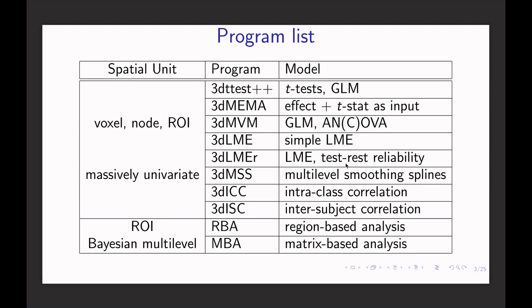3D MSS — Multi-level Smoothing Splines. We use this program to model non-linear relationships between a quantitative variable and brain response. Or we may use it to model the situation when each task is estimated with multiple basis functions — essentially estimating the hemodynamic response, so each condition will have multiple betas. 3D ICC is for intra-class correlation, but this is the classical version. Recent investigation indicates the concept of intra-class correlation may be a bit problematic, as it tends to underestimate reliability. A better approach would be to use 3D LMER to perform test-retest reliability.